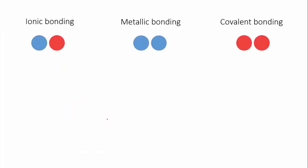There are three types of chemical bonding: ionic, metallic, and covalent bonding. What differs between them is exactly how the electrostatic attraction arises between nuclei and electrons.